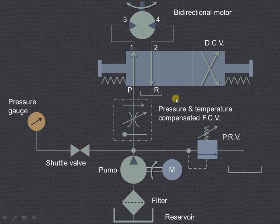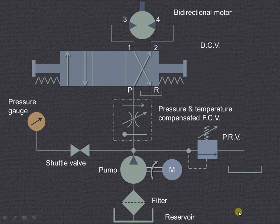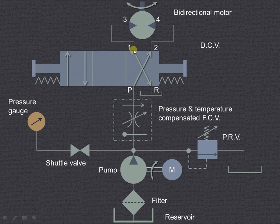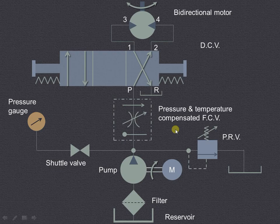Now suppose we operate the spool of the direction control valve to get the right envelope mode. The liquid will enter from port P to 2, then from 2 to 4, causing the motor to rotate in the opposite direction. The liquid from the other side — from port 3 — will enter into port 1, from 1 to R, and then go to the reservoir. This is how the hydraulic circuit controls the speed of a bi-directional motor using the pressure and temperature compensated flow control valve. Thank you.